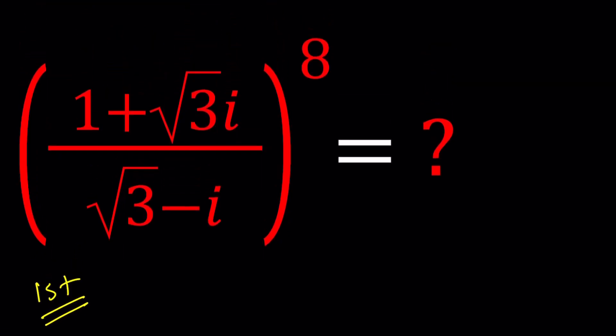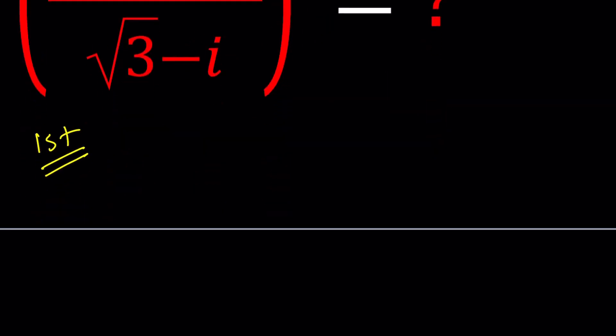So we can go ahead and write 1 + √3i as 2 times e to the power i π/3. Now how do I know that?